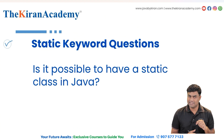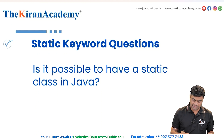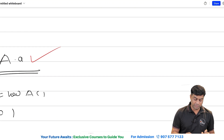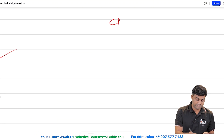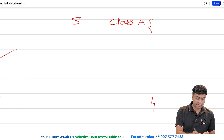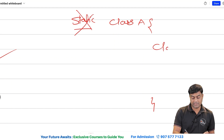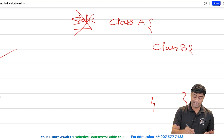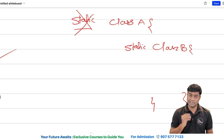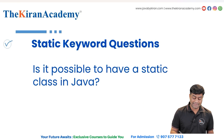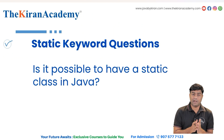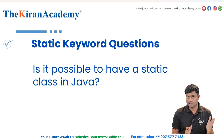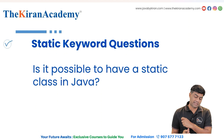Coming to the next question: is it possible to have a static class in Java? The answer is no for outer classes, but yes if you are using an inner class. You cannot have the static keyword on an outer class like `class A`, but if you have `class B` inside `class A`, then you can have the static keyword on the inner class. Making an outer class static is not possible, but making an inner class static is possible.